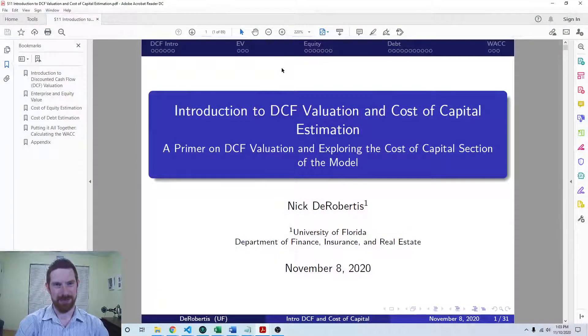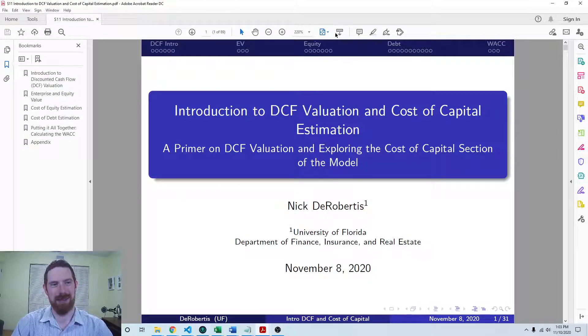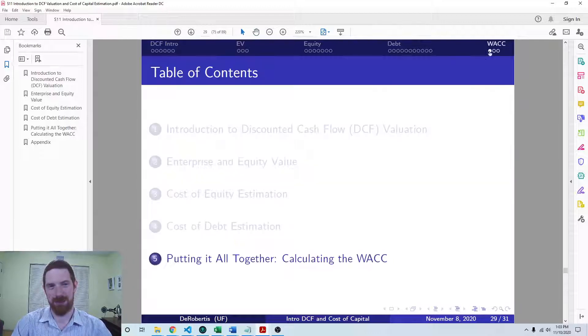So this is our last video in this lecture segment. We already covered an intro to the DCF enterprise and equity value, cost and market value of equity, cost and market value of debt. Now we are just coming to put it all together as the end of the cost of capital portion of the model to calculate the WACC, which will become the discount rate we use in the DCF model.